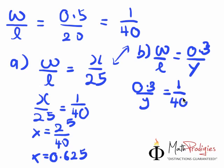So, in this case, you just multiply, Y times 1 and 40 times 0.3, you get Y equals to 40 times 0.3, which equals to Y equals to 12 cm. And that's how you get the answer.